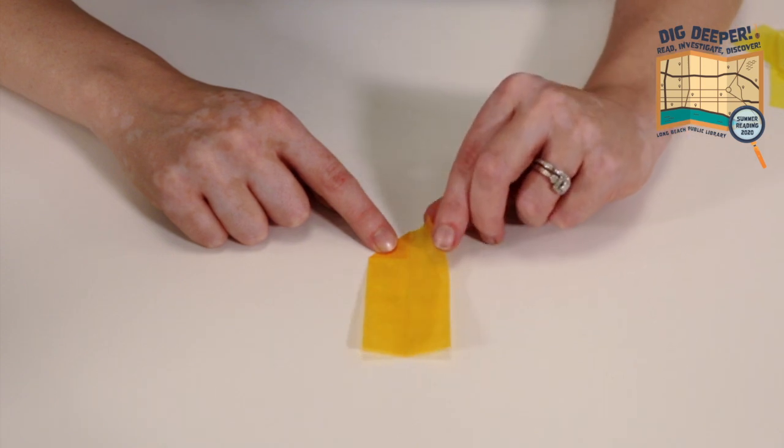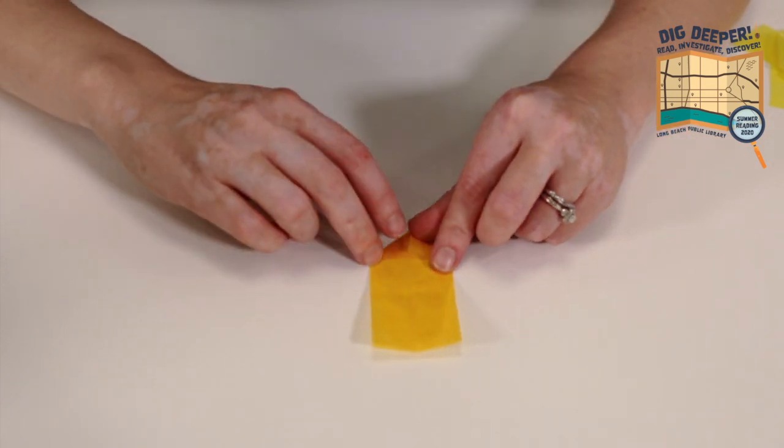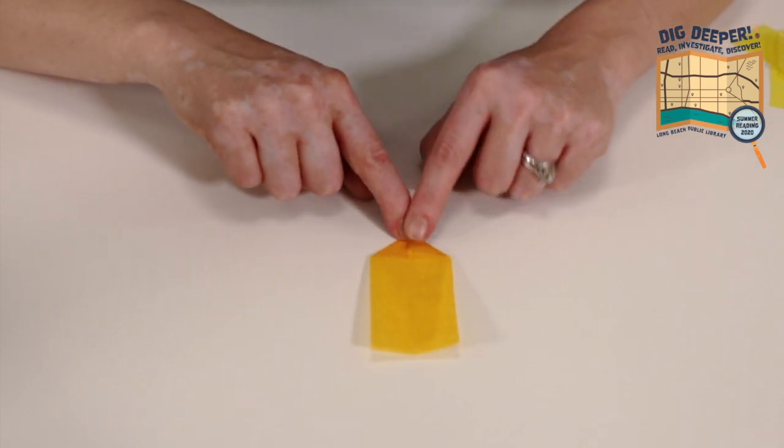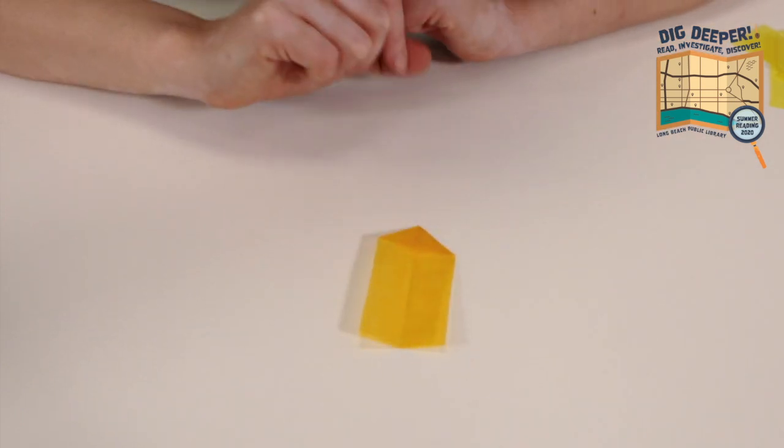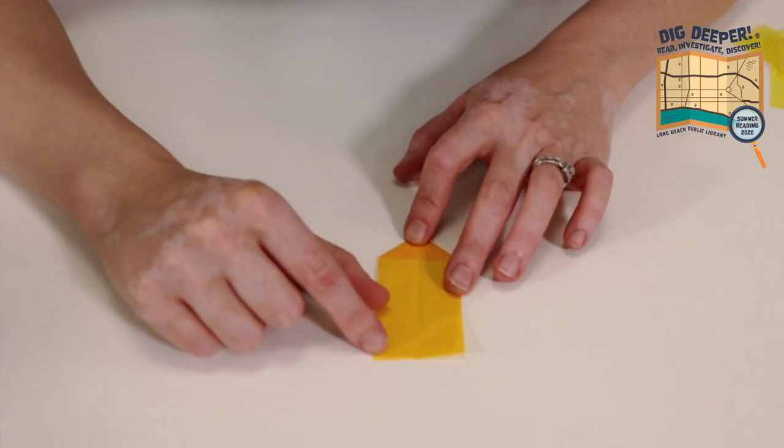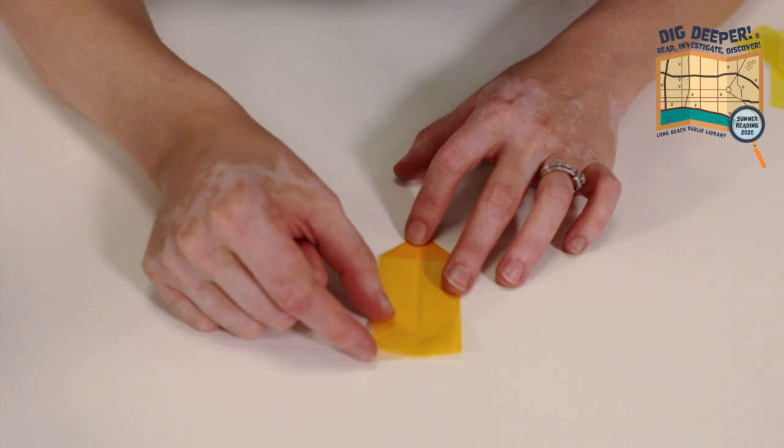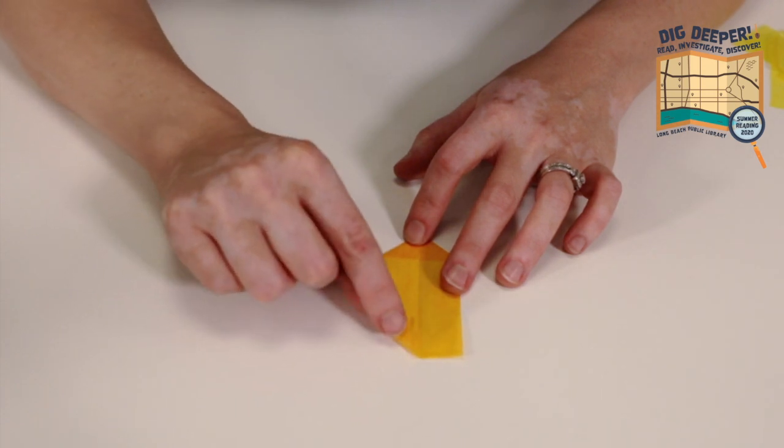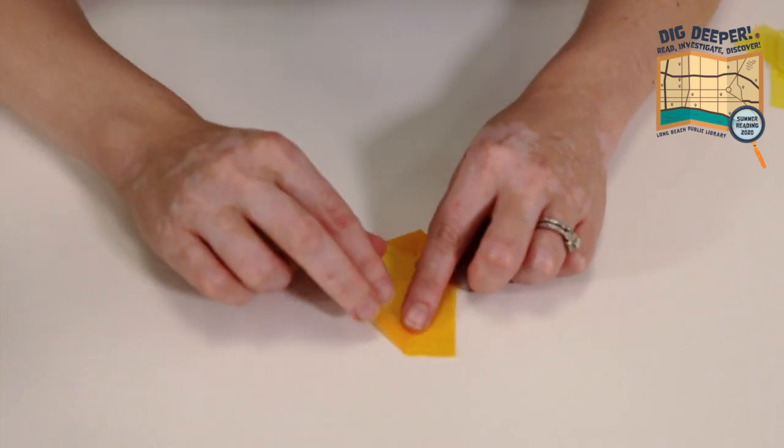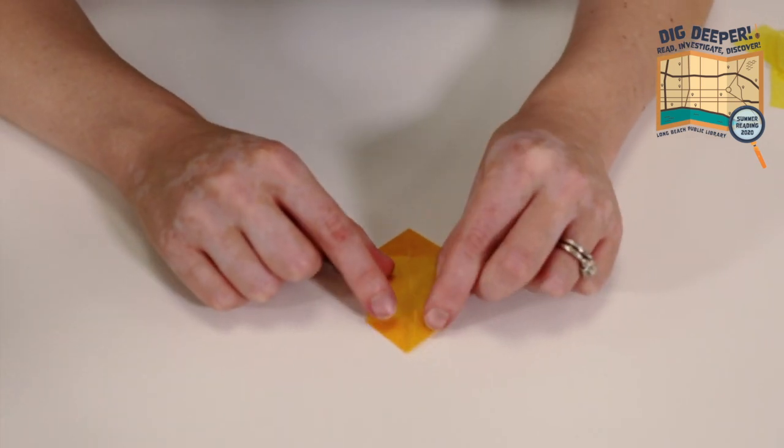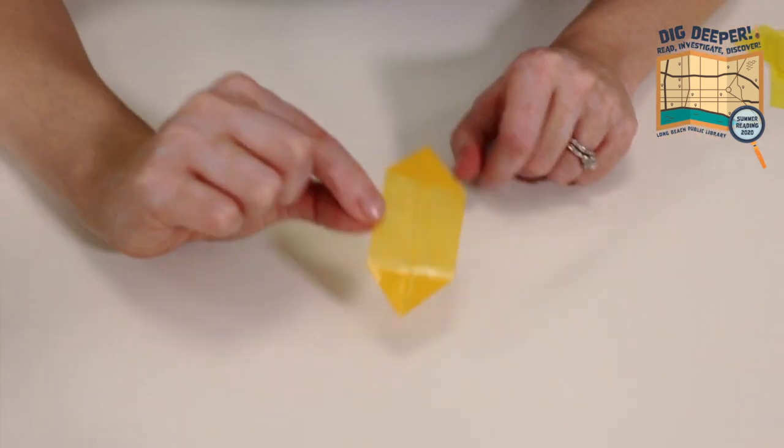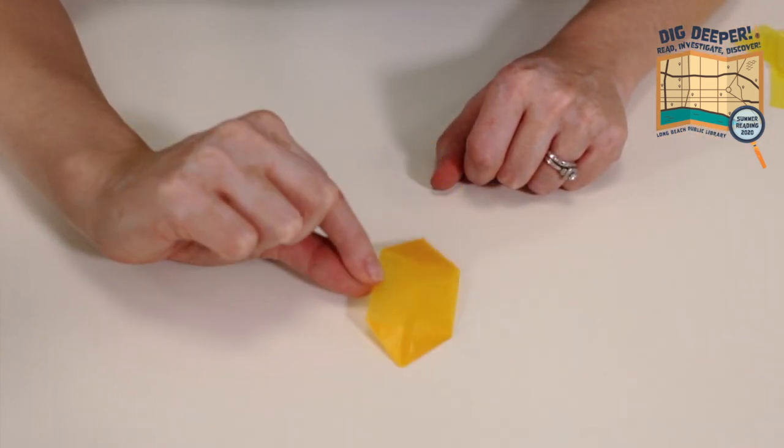And I'm going to do the same thing on the other side. I'm going to take the corner, fold it down and diagonally towards the crease until it lines up. And then I'll fold it down with my finger. Use your fingernail to get a sharp edge. And I'll do the same on the bottom. I'm going to take the bottom left corner and fold it up this time to your center crease. And the bottom right corner, fold it up to your center crease so that you get this kind of diamond shape.